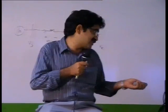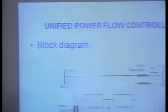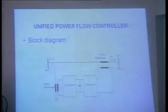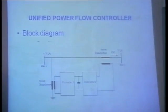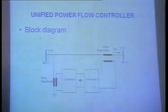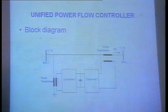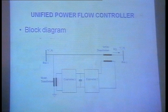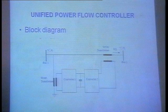The rectifier converts fixed AC into variable DC. Converter 1 provides reactive power control. By varying the firing angle, I can vary the DC voltage; by varying that voltage, I can vary the injected voltage. Therefore, the receiving-end reactive power can be altered.